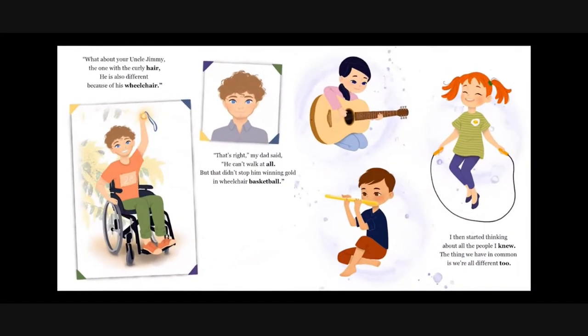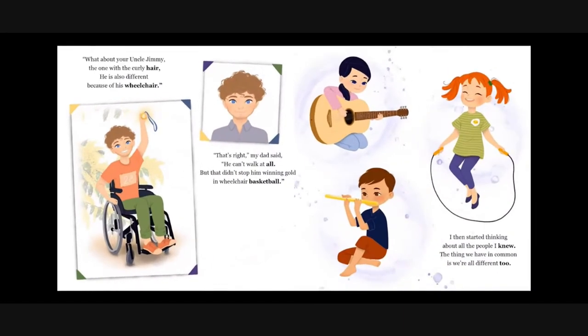What about our Uncle Jimmy, the one with curly hair? He is also different because of his wheelchair. That's right, my dad said. He can't walk at all, but that didn't stop him winning gold in wheelchair basketball.